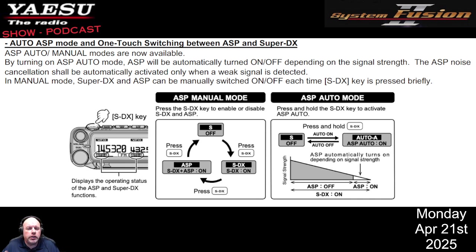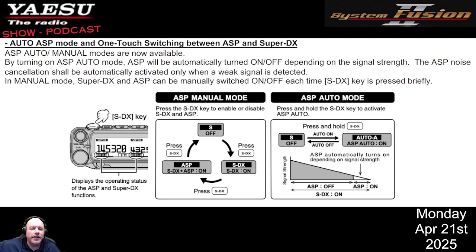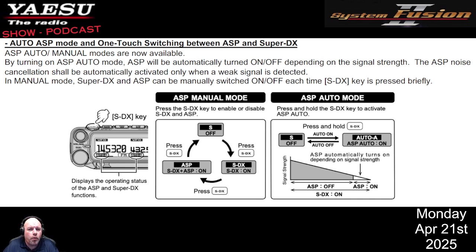A lot of people said they wished there was a manual way to turn it on and an auto way to turn it on. If you've had the 150 in the car, driving places with a weak copy on the repeater because you're behind a hill, then once you get over that hill and into a better area, the ASP actually causes an issue. So many people asked: can we have an auto function so we don't have to toggle it on and off constantly? The answer is yes — and that's what today's firmware update delivers.